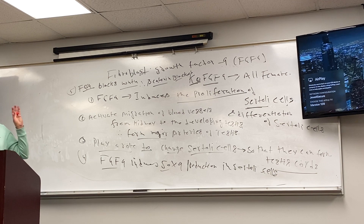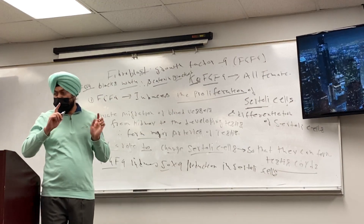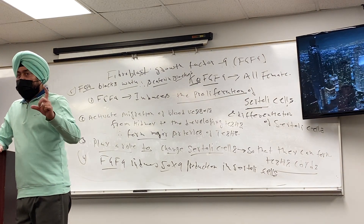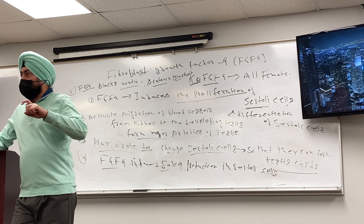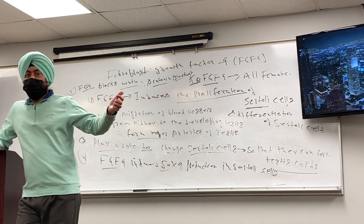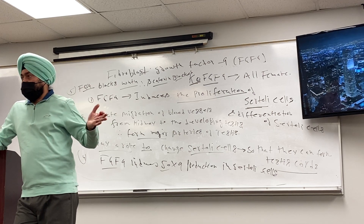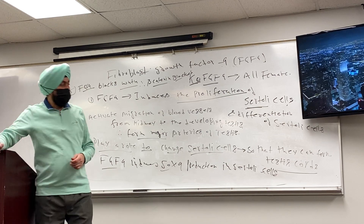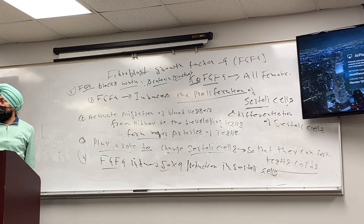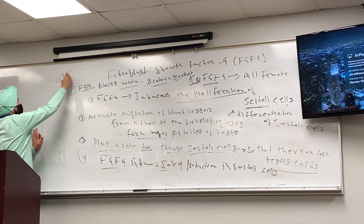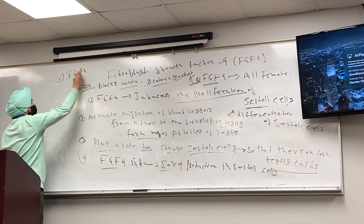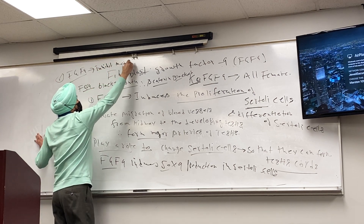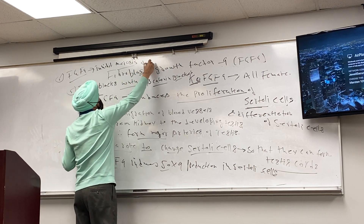Most importantly, when we started talking about gametogenesis, we said that in the female, oogonia immediately start meiosis. But spermatogonia type A do not go into meiosis — meiosis occurs only in the puberty. What causes that inhibition is FGF9. Number 6 — FGF9 inhibits meiosis of germ cells.